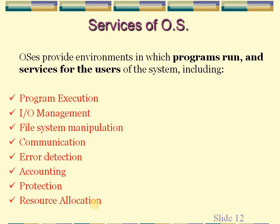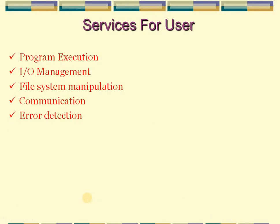Now we will see the actual services provided by the operating system. The operating system provides environments in which programs run and services for the users of the system, including: program execution, input/output management, file system manipulation, communication, error detection, accounting, protection, and resource allocation. These are the common services of the operating system.